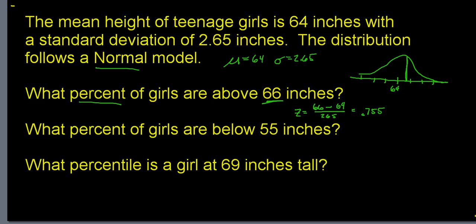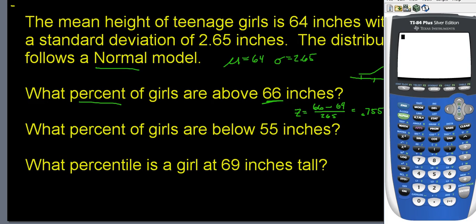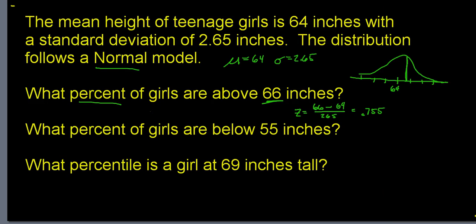To find the percent above, I'll use normalCDF on the calculator. I start at my Z-score of 0.755 and go up to infinity, represented as a bunch of 9s. Leave mean and standard deviation at 0 and 1, because those are the Z-score parameters for the normal model. The result is 22.51%, so 22.51% of girls are above 66 inches tall.